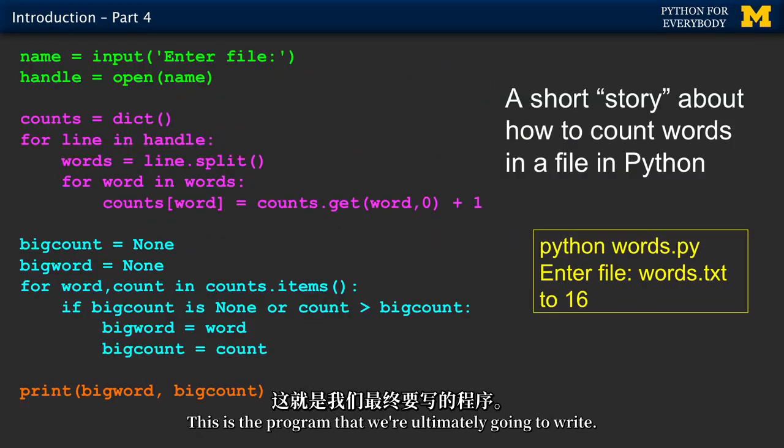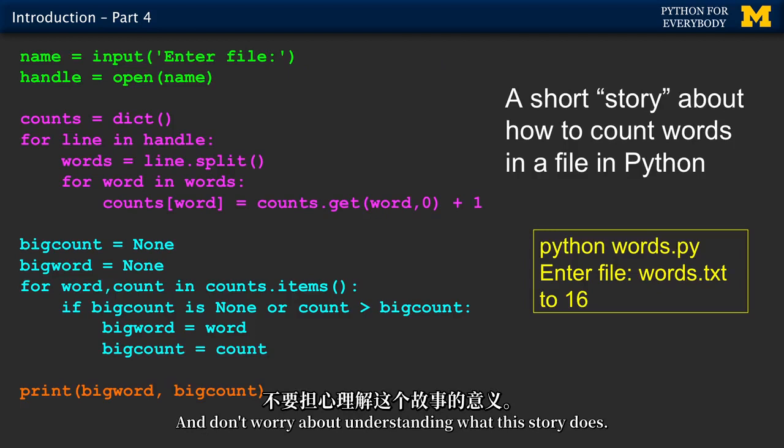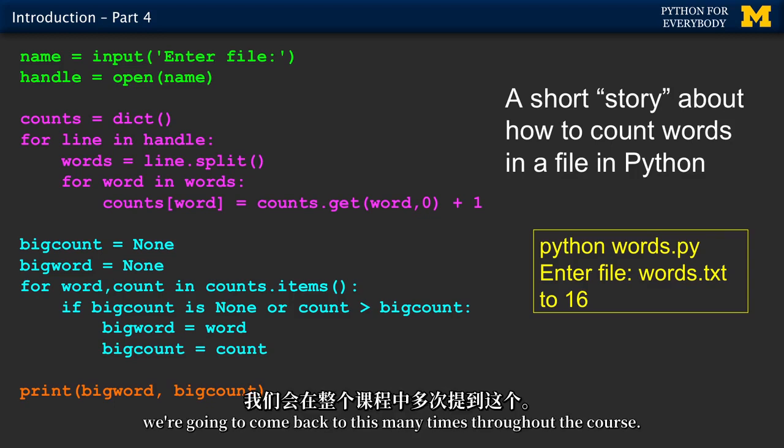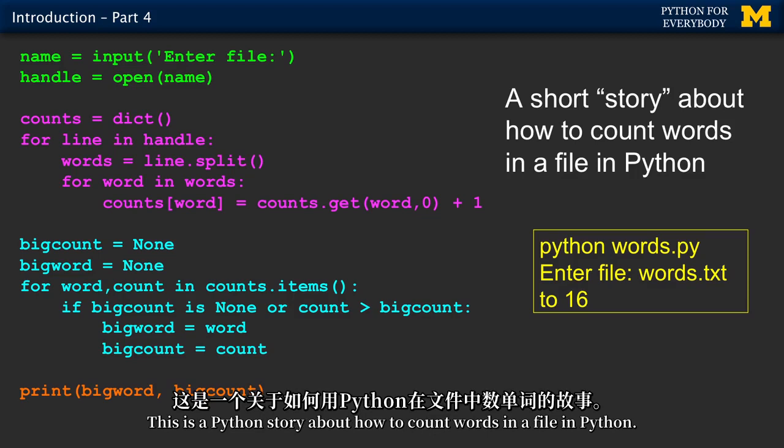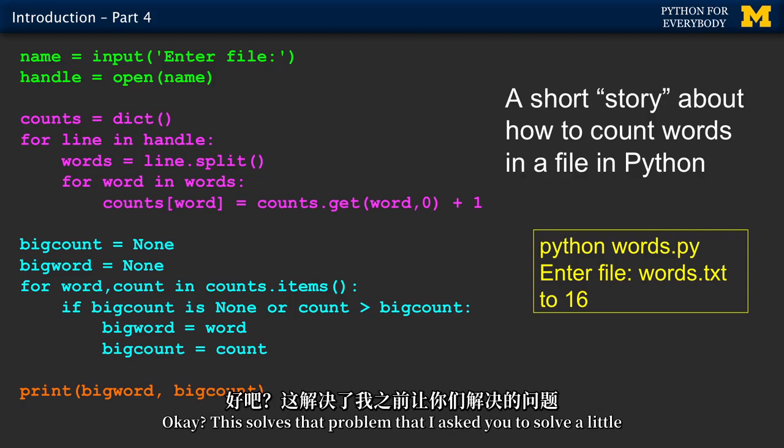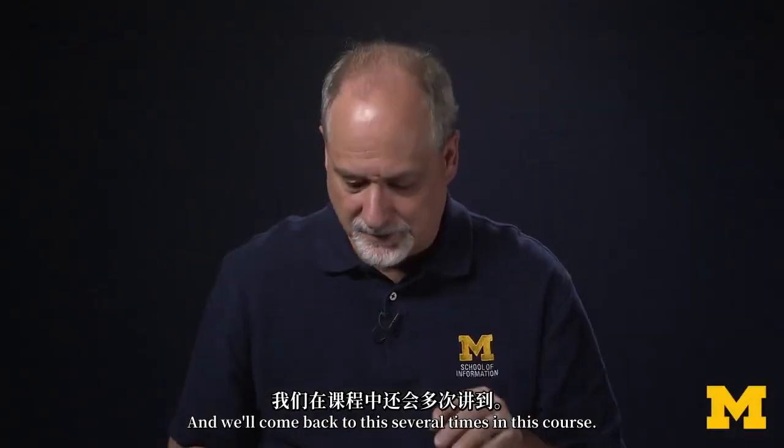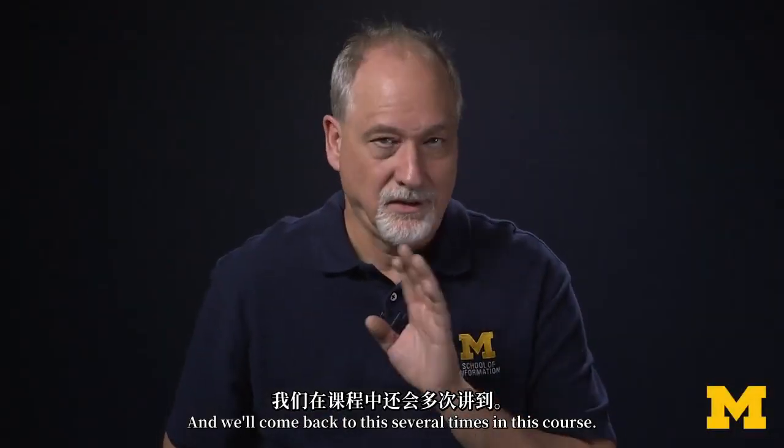This is the program that we're ultimately going to write. Don't worry about understanding what this story does. We'll talk about this later. We're going to come back to this many times throughout the course. This is a Python story about how to count words in a file in Python. This solves that problem of what the most common word was and how many there are.